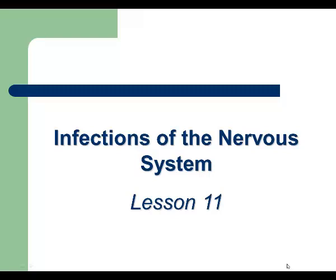Infections of the nervous system. In this lecture we're going to talk about the different pathogens and infections that can affect a human's nervous system. As always we start briefly with anatomy of the nervous system, its function, and then we continue with infections or syndromes that can affect the human nervous system and their main characteristics.